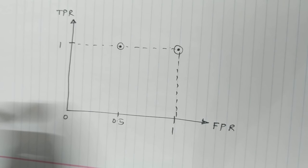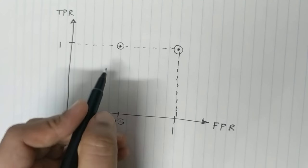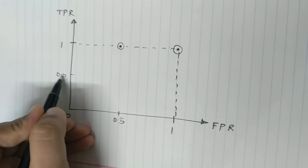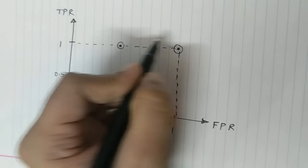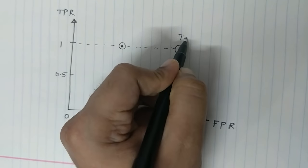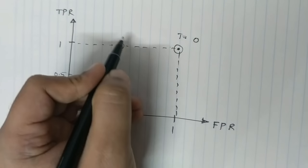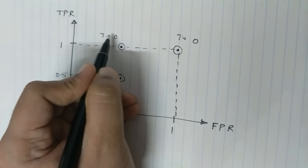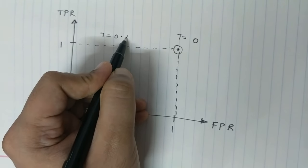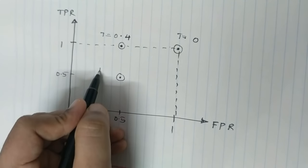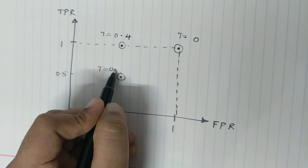At threshold 0.6, I had a TPR and an FPR of 0.5, 0.5. So this value would somewhere be here. So this is at threshold 0, this is at threshold 0.4, this is at threshold 0.6.